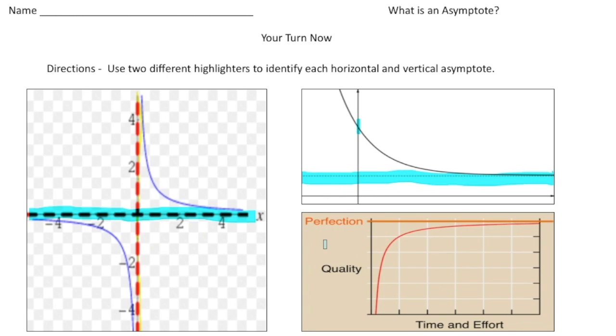Last but not least, we have our third graph. This time our horizontal asymptote is going to be right here, the line of perfection, like that.